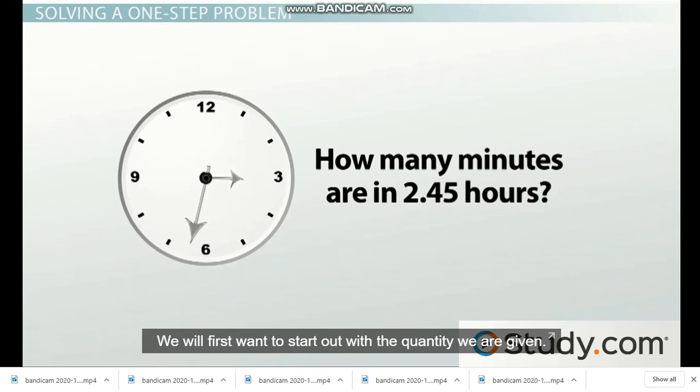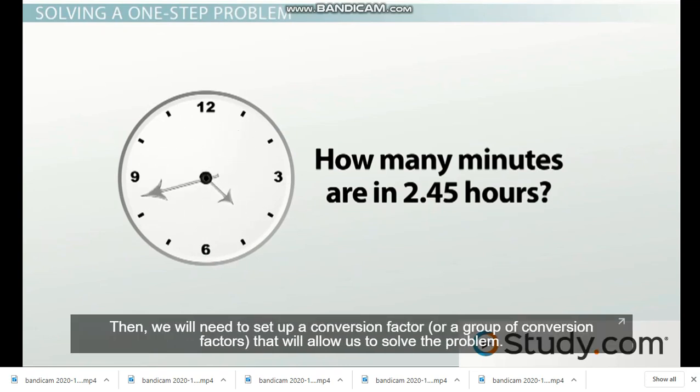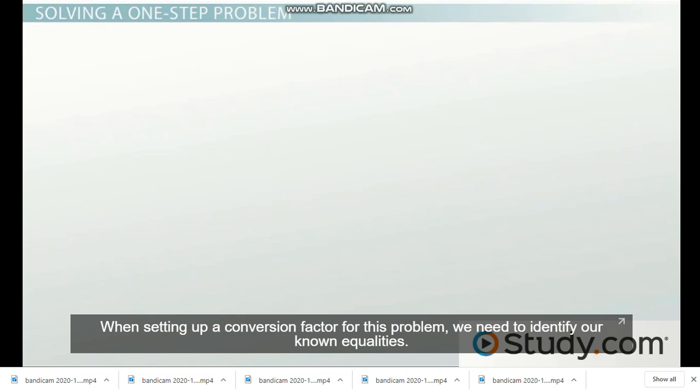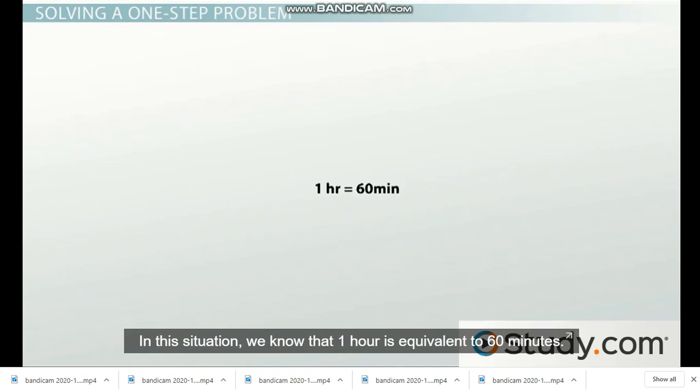We will first want to start out with the quantity we are given. Then, we will need to set up a conversion factor or a group of conversion factors that will allow us to solve the problem. When setting up a conversion factor for this problem, we need to identify our known equality. In this situation, we know that 1 hour is equivalent to 60 minutes.